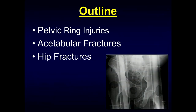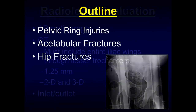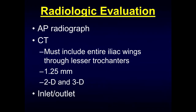What we're going to do is review pelvic ring injuries and discuss acetabular and hip fractures. In the radiographic evaluation for pelvis and hip trauma, the mainstay is the AP radiograph. When we move on to CT, the examination must include the entirety of the iliac wings all the way through the lesser trochanters. Thin sections are necessary at CT, typically 1.25 millimeters with 2D reconstruction images, and 3D acquisitions may be obtained to help the orthopedic surgeon, as well as inlet and outlet views.